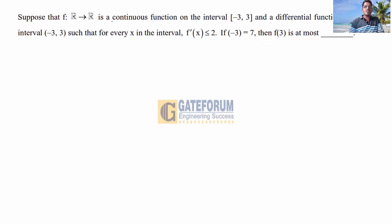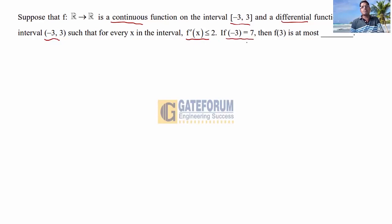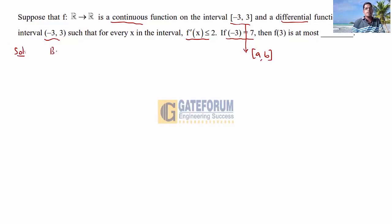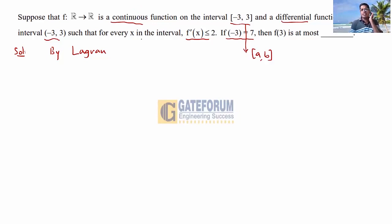Solution: The conditions given are — F(x) is continuous on closed interval [a, b] and differentiable on open interval (a, b). These are the two standard conditions for Lagrange's Mean Value Theorem. Here, F′(x) ≤ 2 and F(−3) = 7, with the closed interval being [−3, 3].